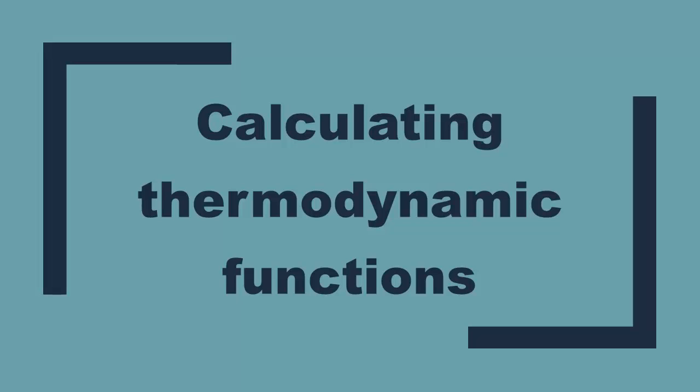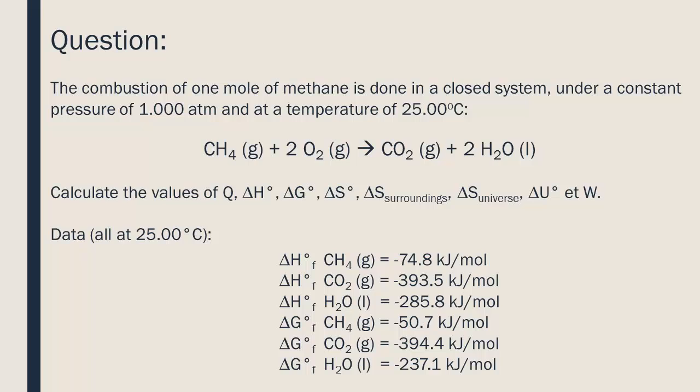Calculating thermodynamic functions. The combustion of one mole of methane is done in a closed system under a constant pressure of 1.000 atmospheres and at a temperature of 25.00 degrees Celsius.